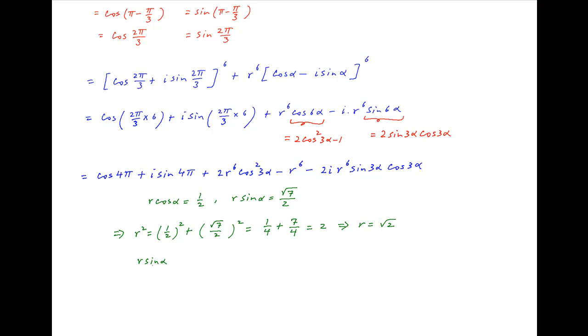Now dividing the two equations, we get r sin alpha upon r cos alpha is equal to root 7, which implies that tan alpha is equal to root 7.